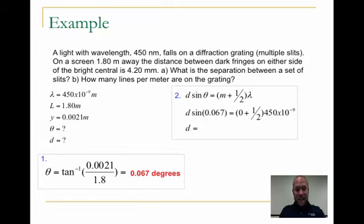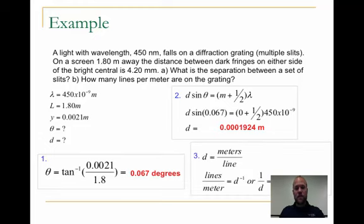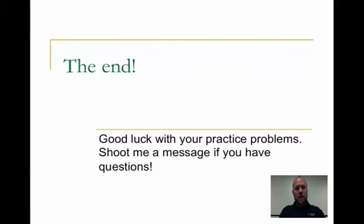Now, in order to find the d, which is the separation between the slits, which is what we're looking for, all we do is plug it in, solve, and we get 1.9 times 10 to the negative 4th meters. And then last, we finish off by finding the lines per meter. This is a very easy algebraic way to solve it. And so the separation, the lines per meter, is just what we're looking for, is just over 5,000 lines. And there you have it. Good luck with your practice problems. Shoot me a message if you have questions. Good luck, and have a great weekend.